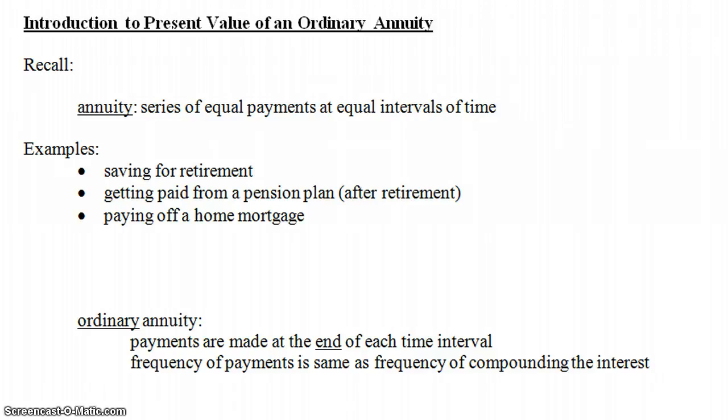That's an annuity where you accumulate funds. There are also other types of annuities — for example, getting paid from a pension plan after retirement, or paying off a home mortgage where you pay a certain amount every month. An ordinary annuity is where the payments are made at the end of each time interval instead of at the beginning or the middle.